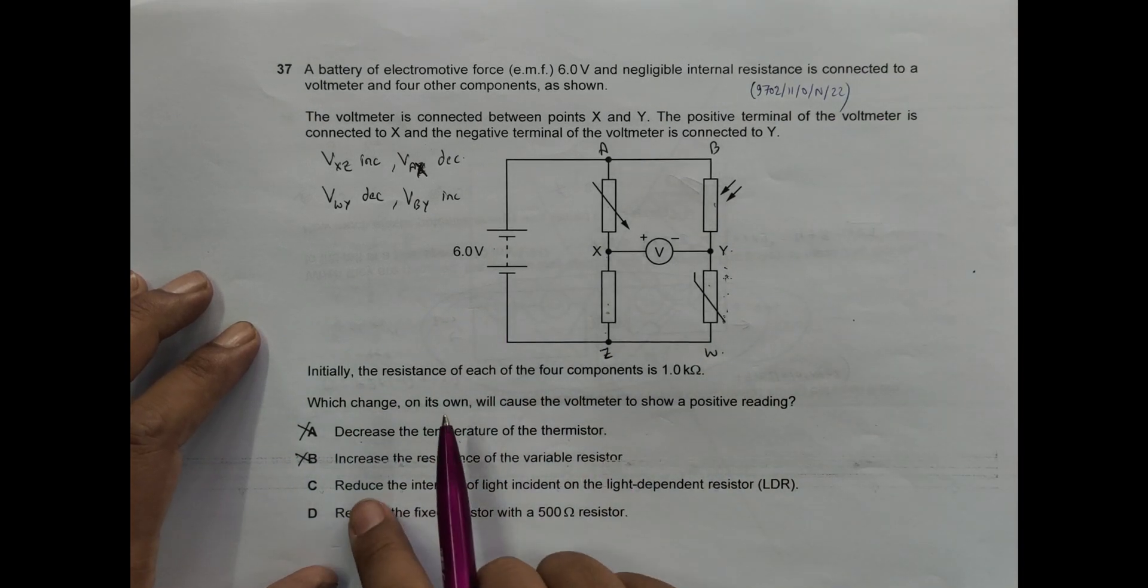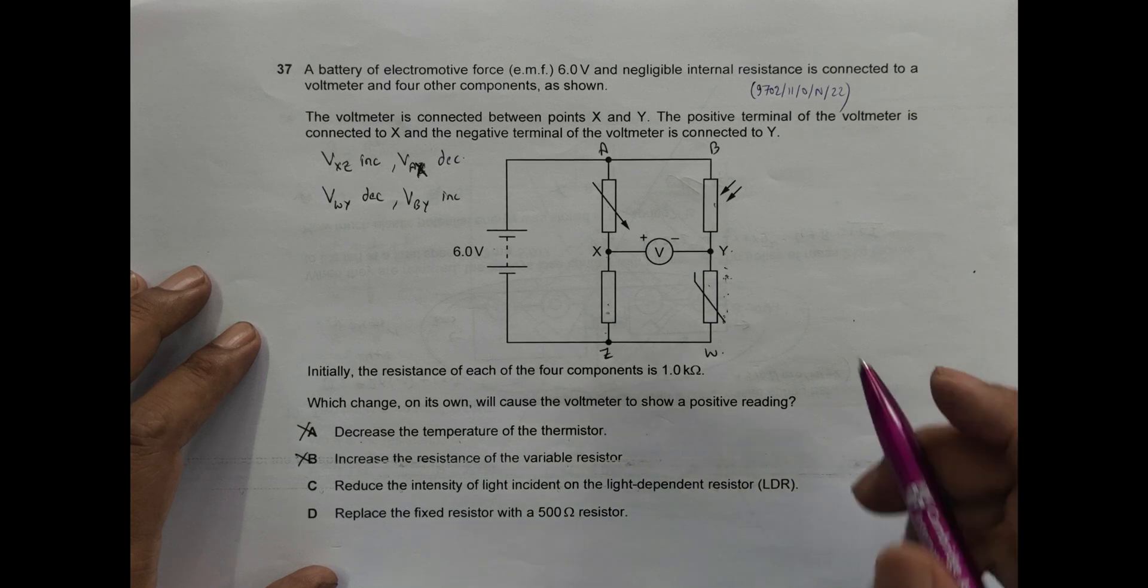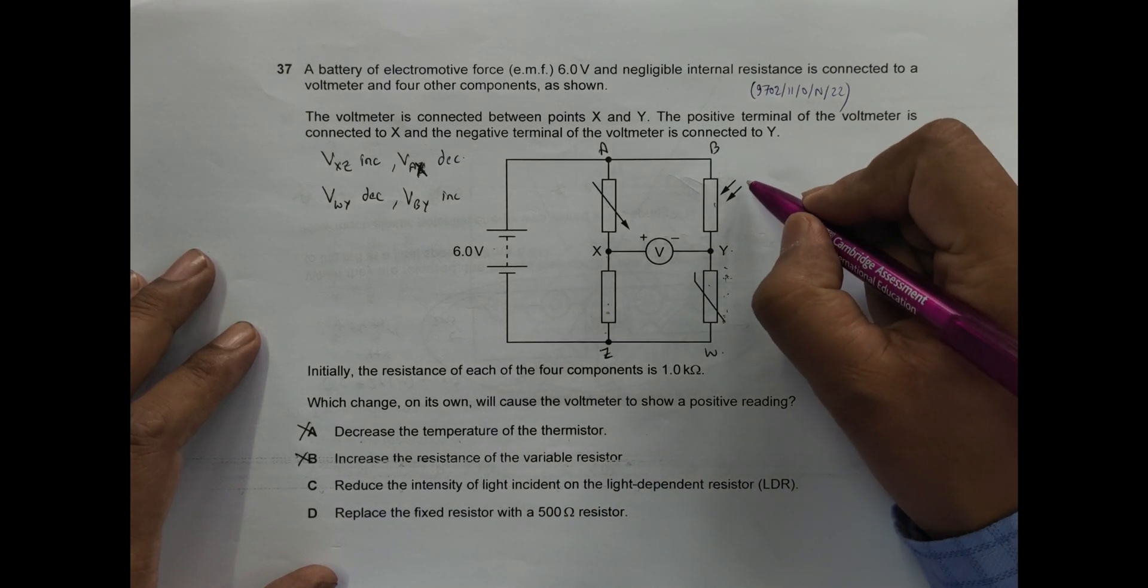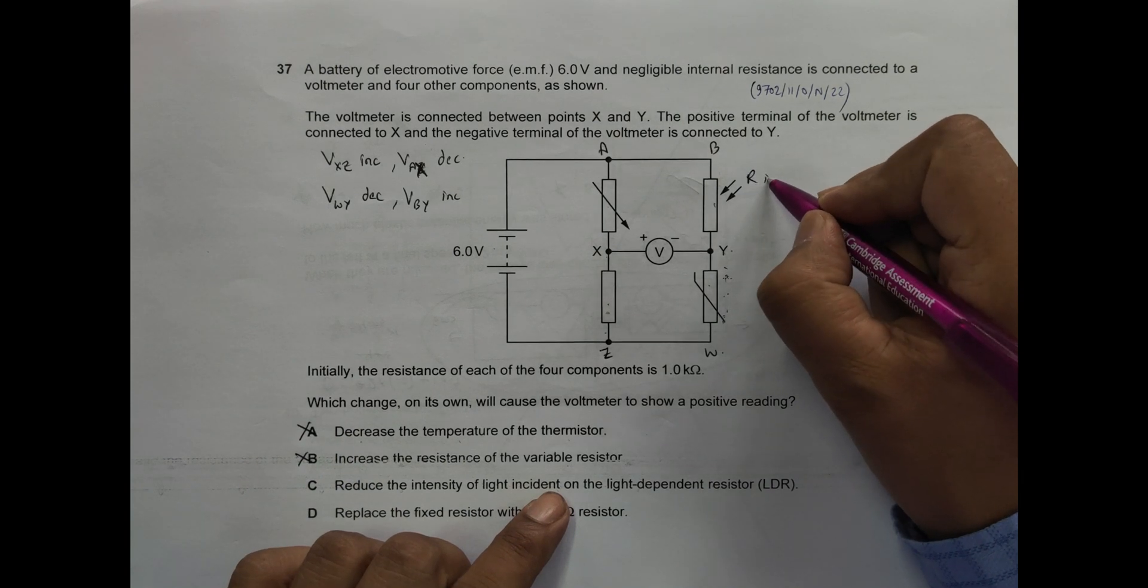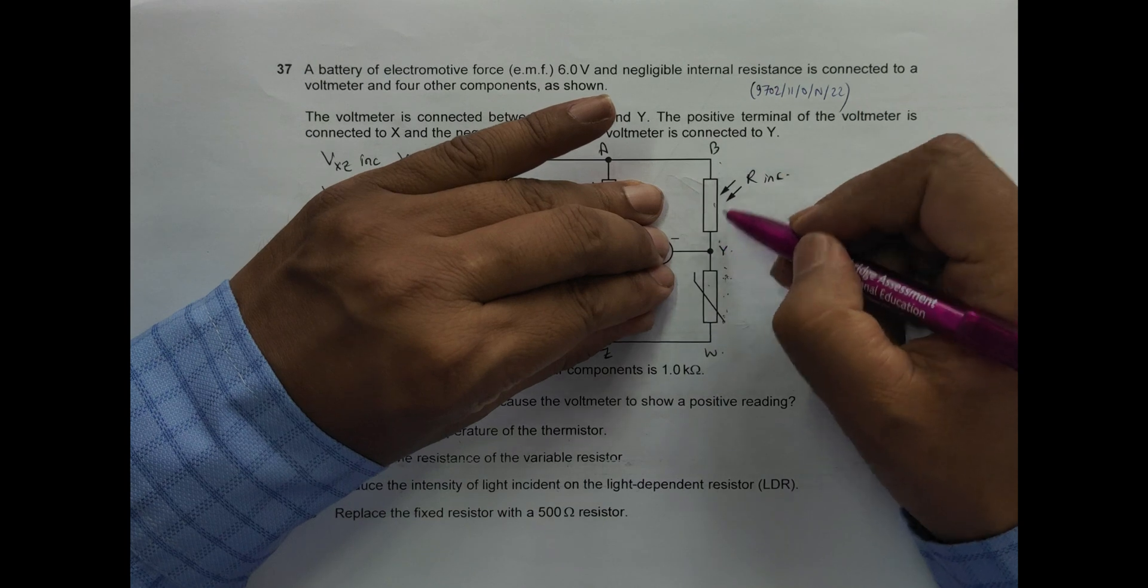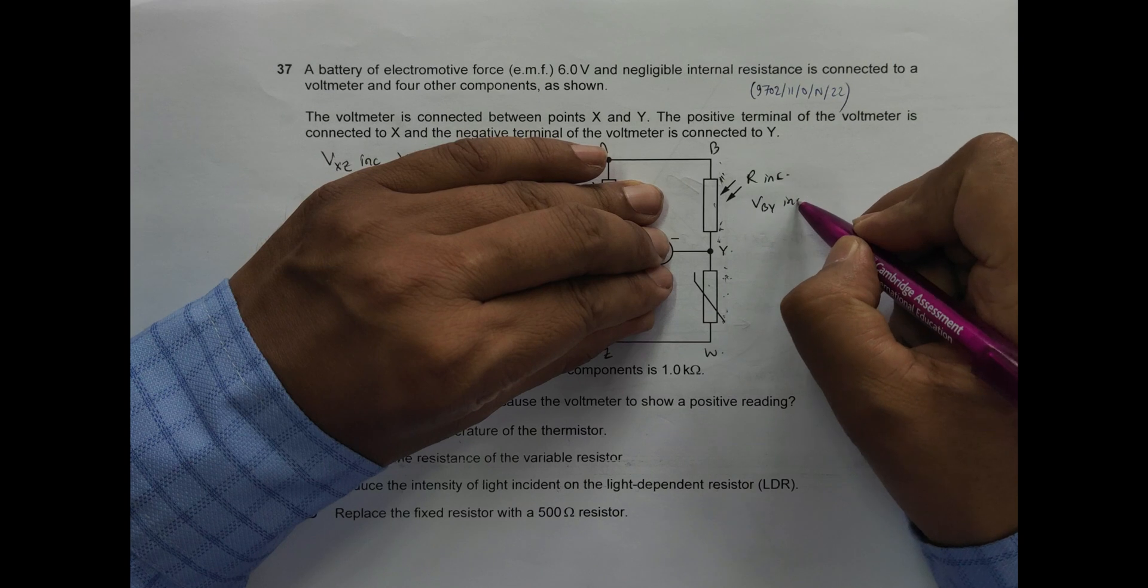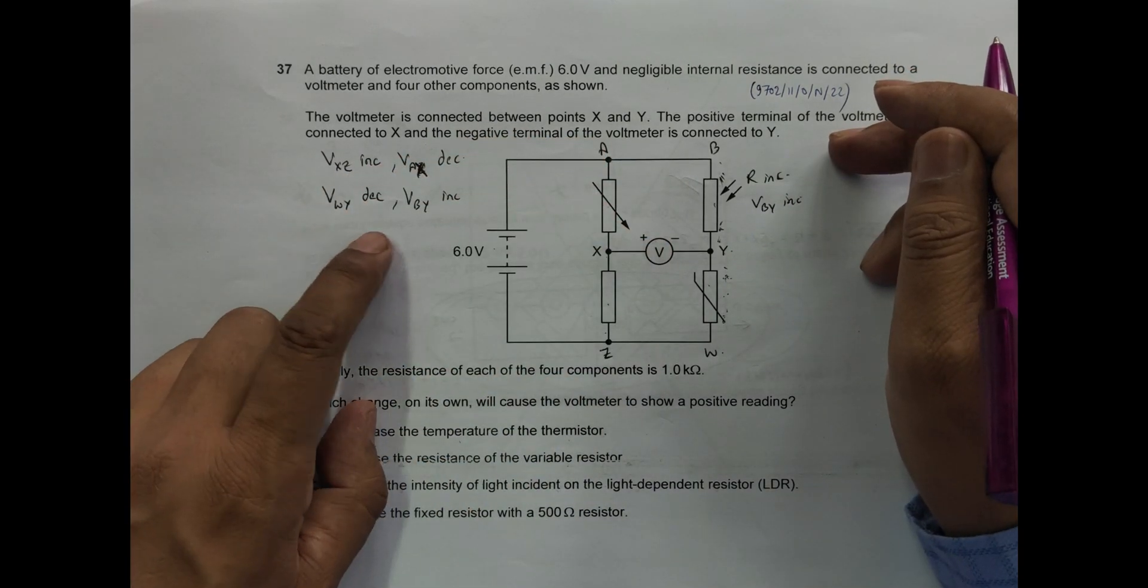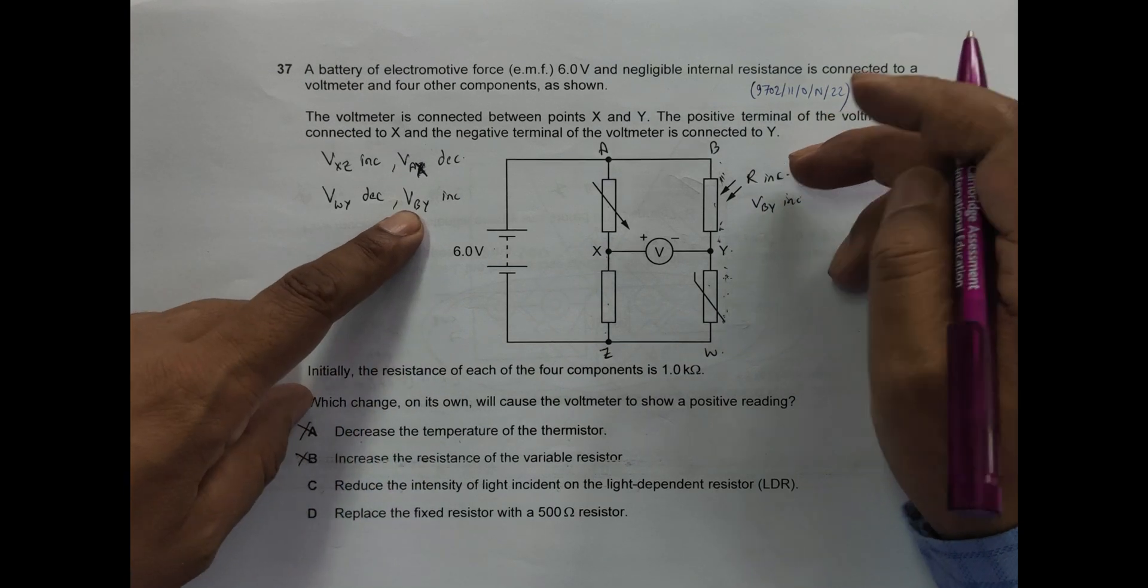In number C, we have reduce the intensity of light incident on the LDR. So here it says reduce the light intensity. So when we reduce the light intensity, its R increases. If R increases from the voltage principle, the voltage here will increase. So this Vby should increase, Vby. And if I go through here, yes, Vby should increase. The choice is there, so choice number C should be the correct choice.